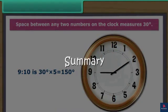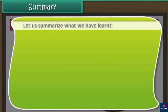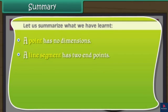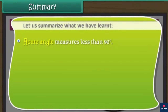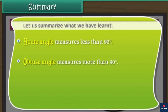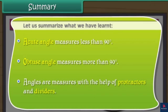Let us summarize what we have learnt. A point has no dimensions. A line segment has two end points. A line has no end points. A ray has one end point. A right angle measures 90 degrees. An acute angle measures less than 90 degrees. An obtuse angle measures more than 90 degrees. Angles are measured with the help of protractors and dividers.